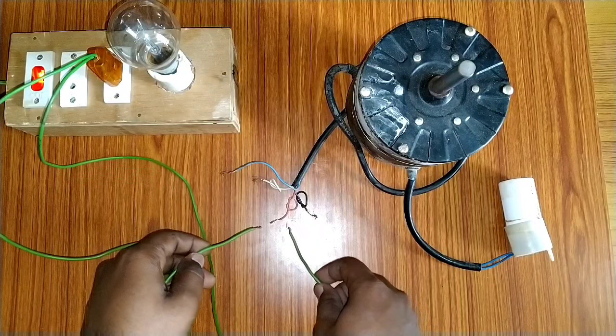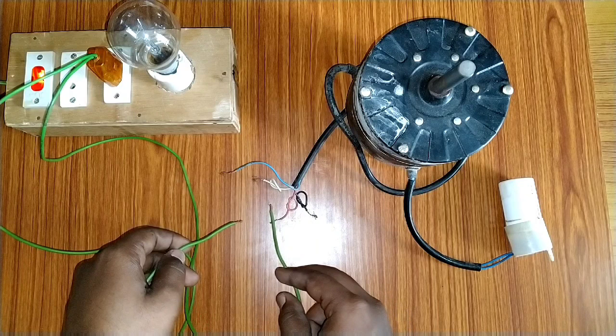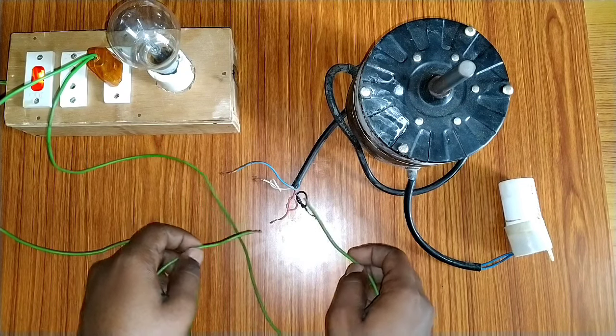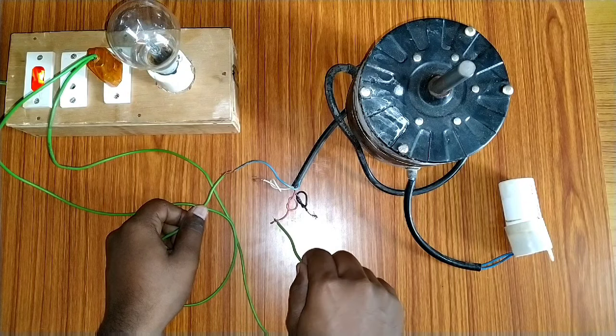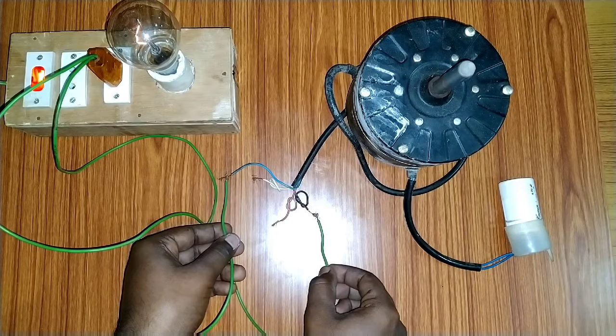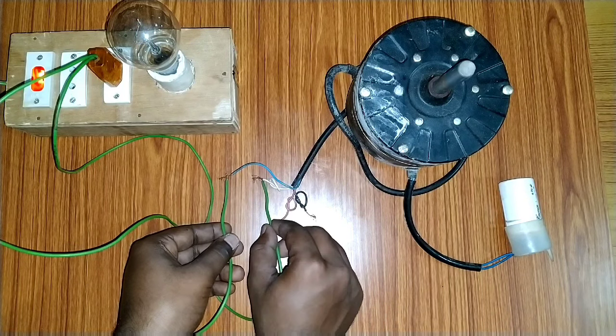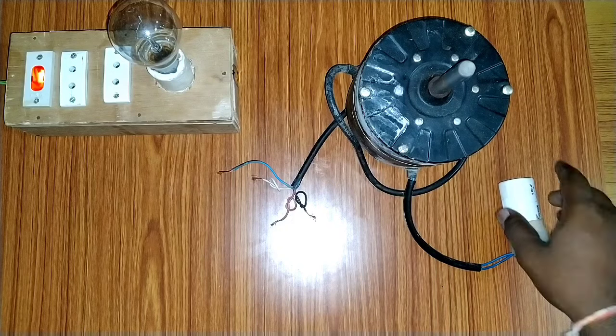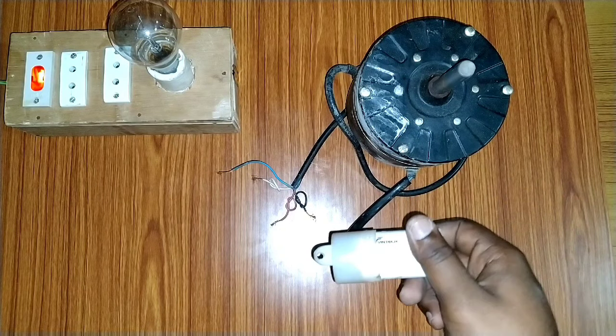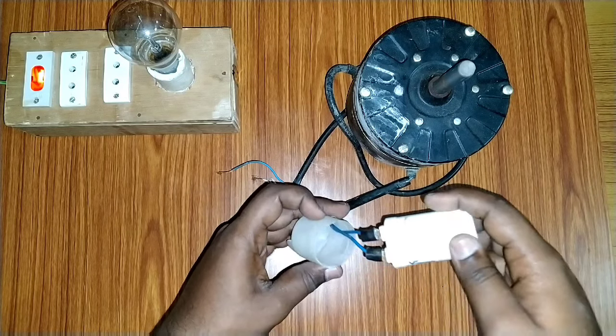Here we are looking at the winding. Blue common, white, red, black, and high speed medium. Let's check the windings.